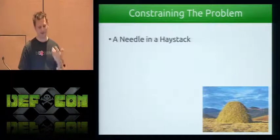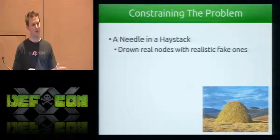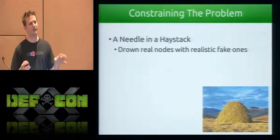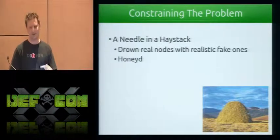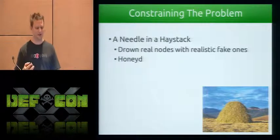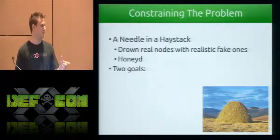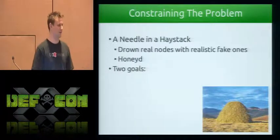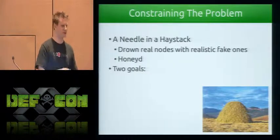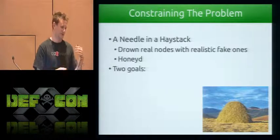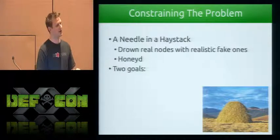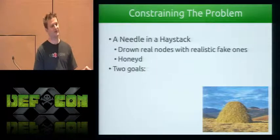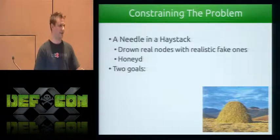We're going to try to make finding your real network nodes like finding a needle in a haystack. We'll drown out the real nodes of your network with realistic-looking fake ones — realistic from a network perspective. To do this, we're going to use a tool called HoneyD. It makes virtual machines, but not in the normal VMware or VirtualBox way. It doesn't have a virtual hard disk or actually emulate an operating system; it's a network daemon that runs and responds to packets as if it were those machines. It looks real from the network but isn't actually a full computer.